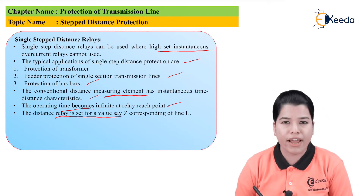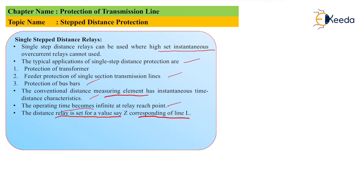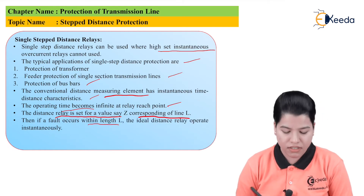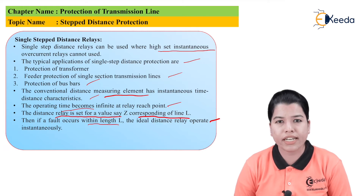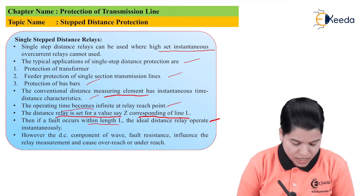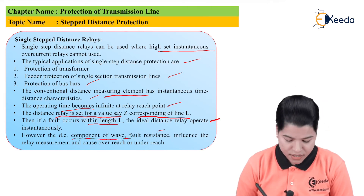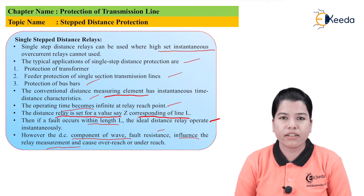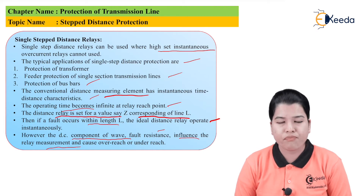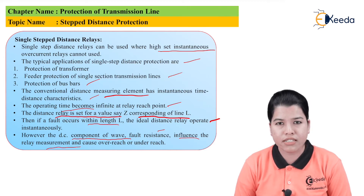The distance relay is set for a value Z corresponding to line length L. If a fault occurs within length L, the ideal distance relay should operate instantaneously, since L is the reach of the distance relay. However, the DC component of the fault current waveform and fault resistance will influence the relay measurement and cause overreach or underreach. Practically, the relay may sense that the impedance has increased or decreased due to the DC component or fault resistance.